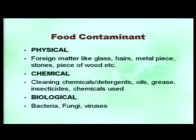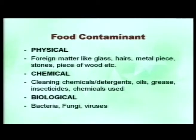Chemical hazards primarily deal with cleaning chemicals that can come in when you are cleaning a floor or table top — detergents, oils, poor maintenance leading to contamination by oil or grease, contamination due to insecticides sprayed during pest control if food is not removed from that area. Overuse of chemicals or additives may also lead to chemical contamination. Chemical contamination can also come from packaging materials through migration. The third form of food contaminant is a biological hazard — a bacteria, fungi, or virus that comes from the environment or from the food itself.